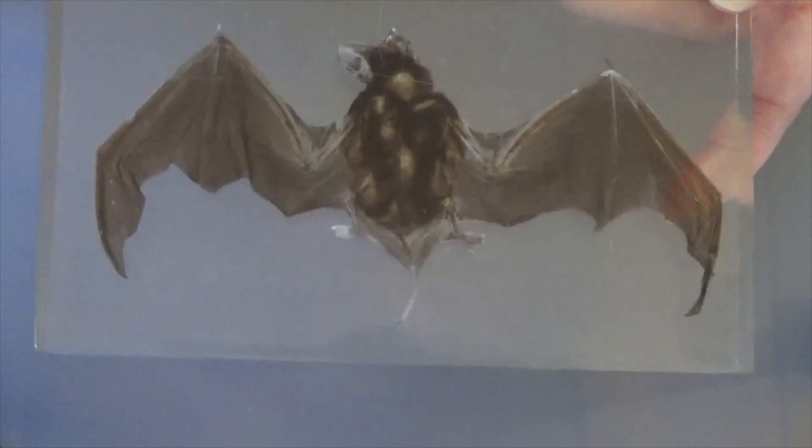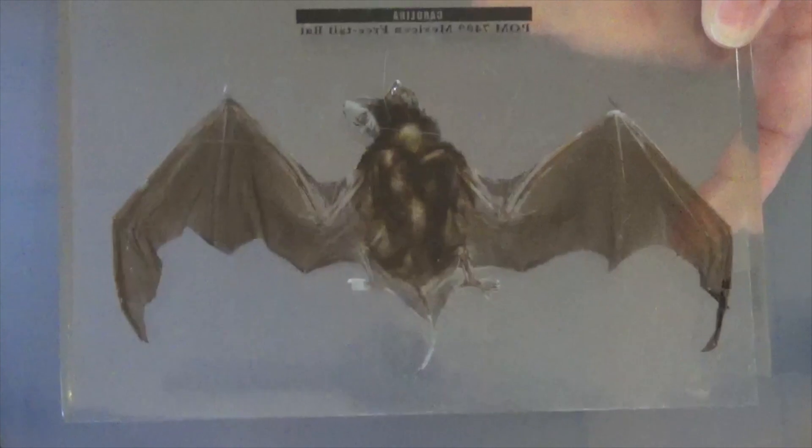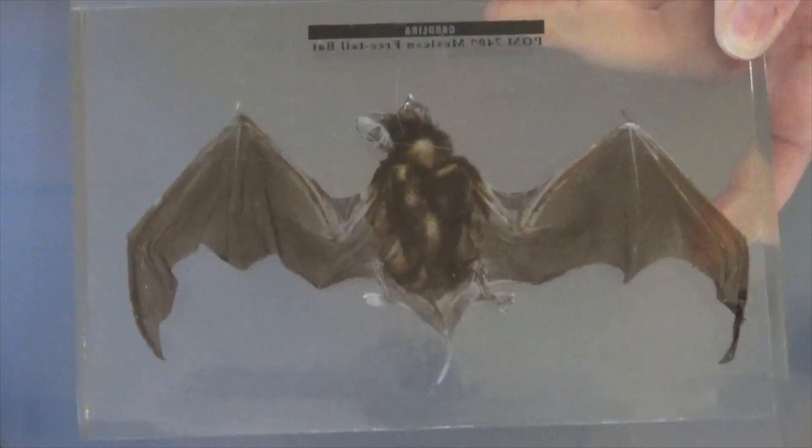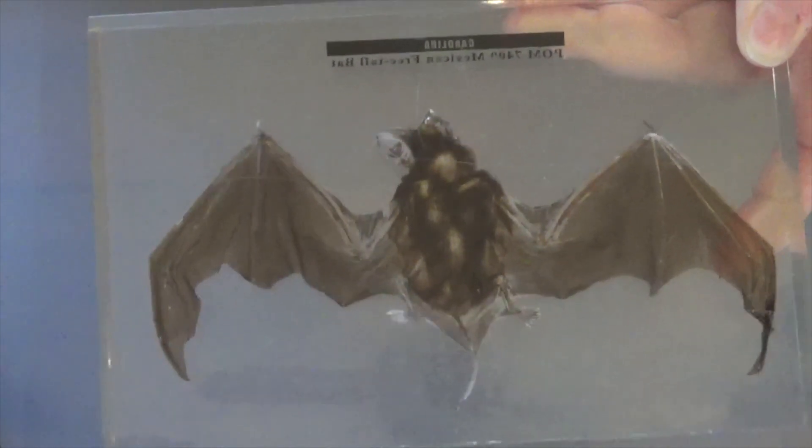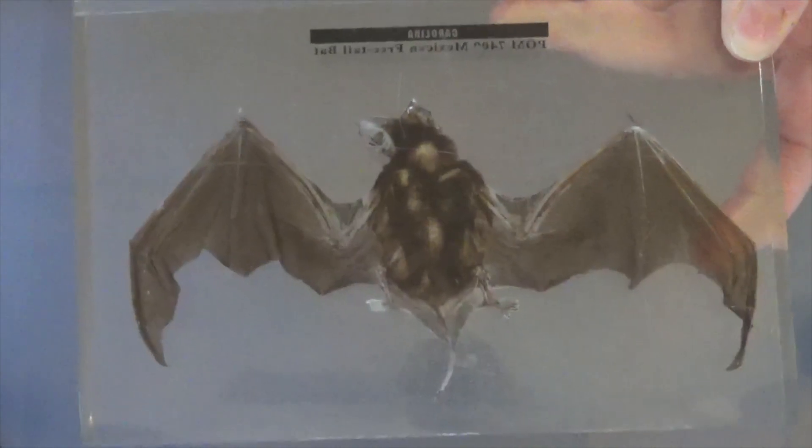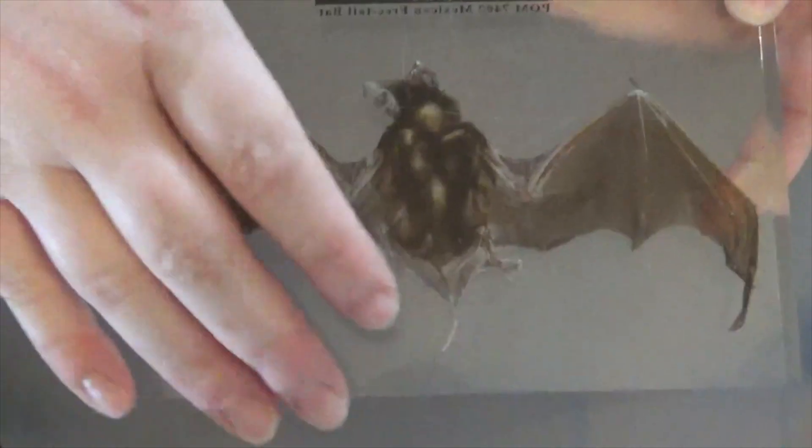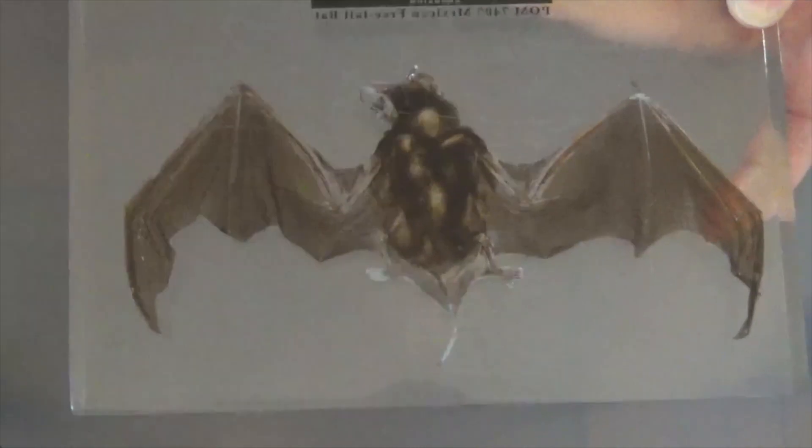one little bitty bat like this can actually eat up to 500 mosquitoes in a single night, which is pretty awesome as far as controlling the number of insects that are in our world. 500 mosquitoes less per night from one bat is 500 mosquitoes that can't bite you and cause lots of itchies. So that's pretty thumbs up in my book.